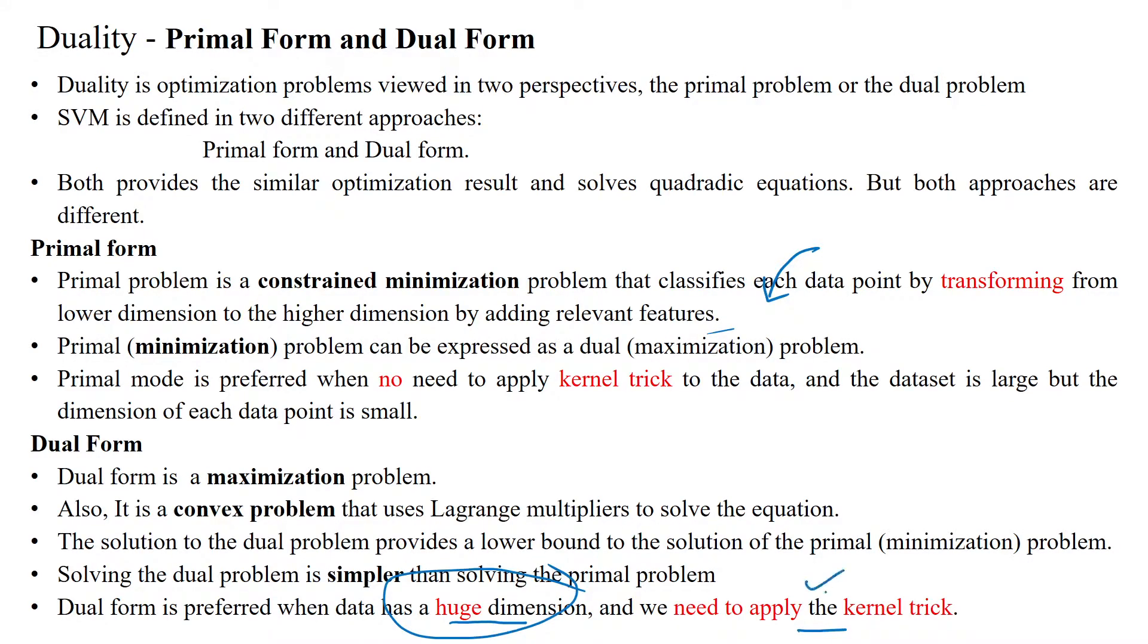We need to apply the kernel trick. We convert lower dimension to higher dimension when the data is non-linear - that's why we apply transformation. But we have low dimension data compared to dual form problem data set.